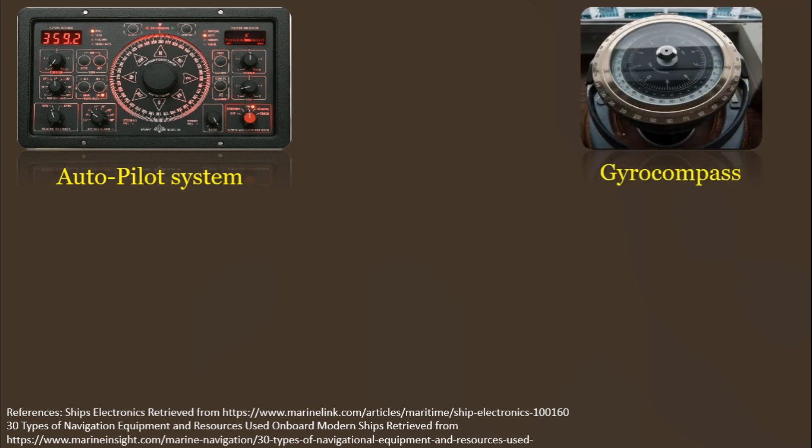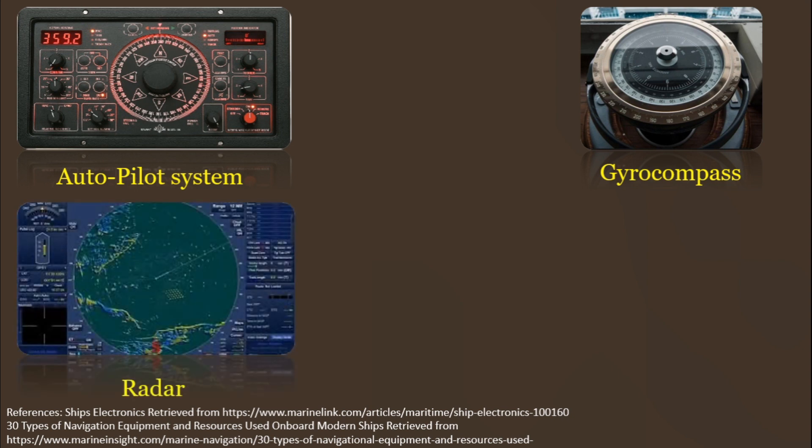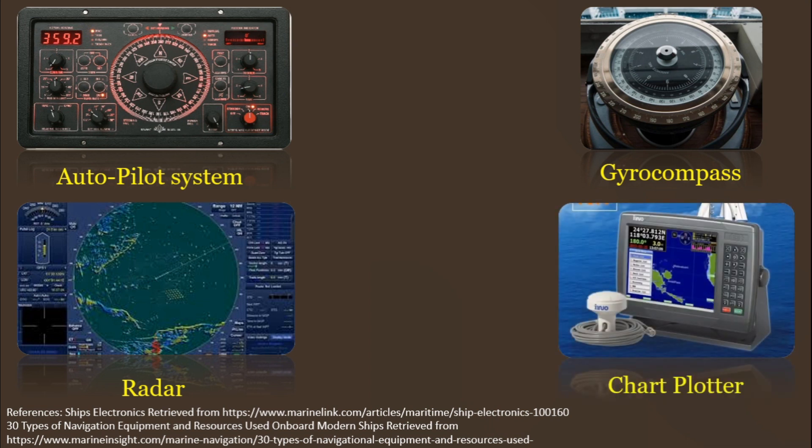Another electronic device is the gyrocompass, which locates the correct north direction and is unaffected by external magnetic field. Next is a radar, which detects targets and displays the information on the screen to avoid collision. And a chart plotter, which combines GPS data with an electronic navigational chart to display the position, heading, and speed of a vessel. All of these electronic devices are found on the deck department.